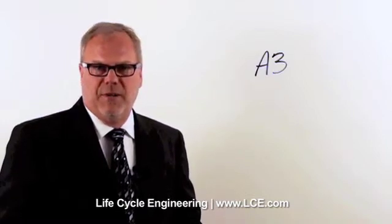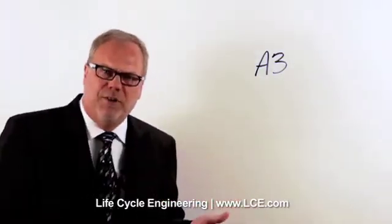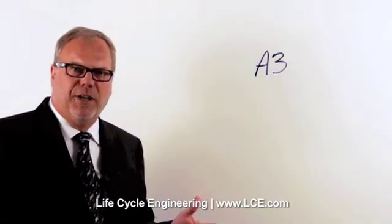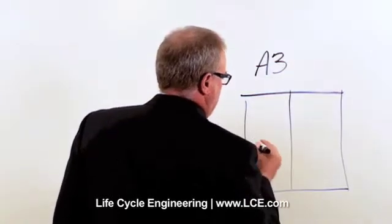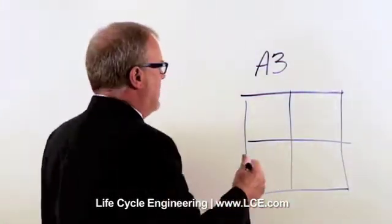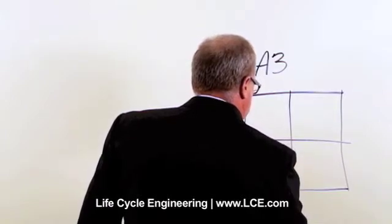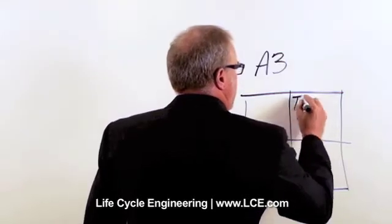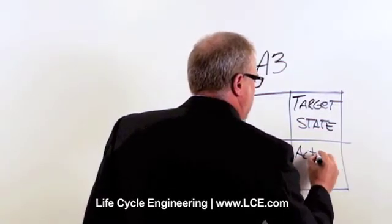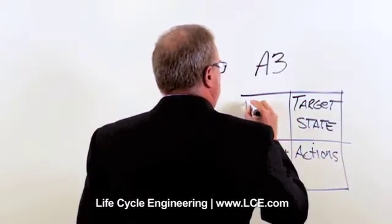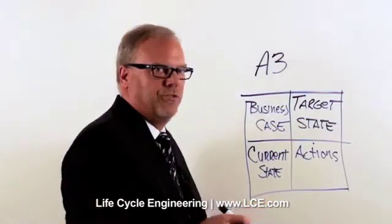For those of you who didn't see my last video about an A3, we'll start with a little bit of background. An A3 is something that was created by Toyota as a problem-solving tool that anyone on the plant floor could use to solve a problem. It's essentially four quadrants where, if we've got a problem, we can identify what's the current state, what's the target state, what do I want to achieve, what type of actions might I need to take, and why am I doing it — what is the business case? A very simple approach to solving problems.